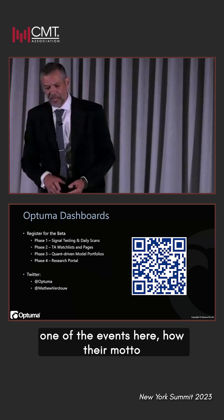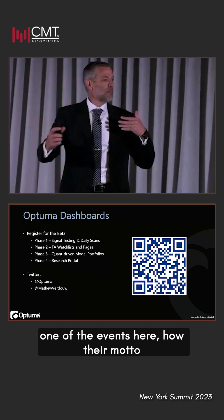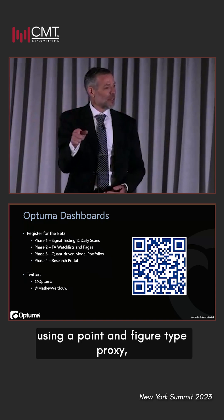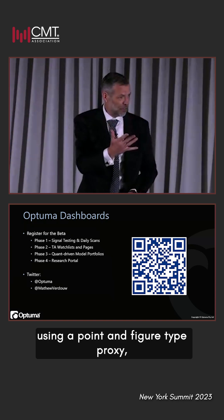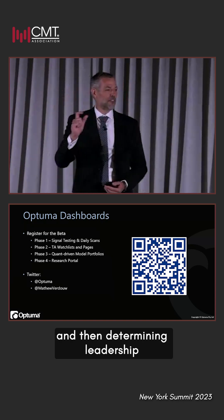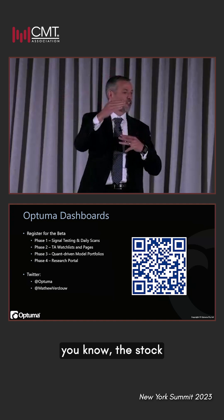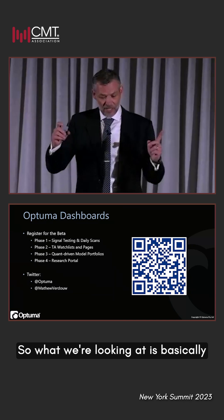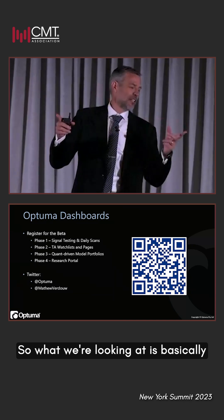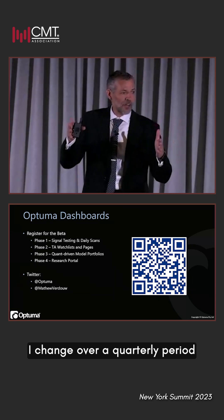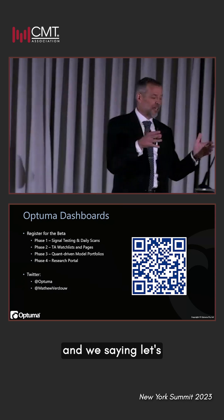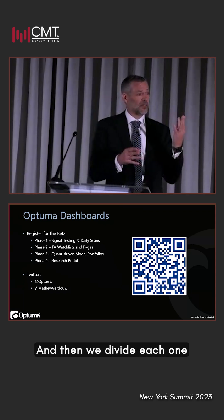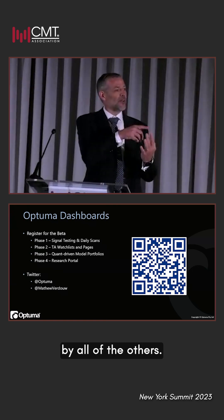...how their model was taking every single security, dividing them using a point-and-figure type proxy, and then determining leadership by counting up the stocks that had the most outperformance. So very similar. What we're looking at is basically a change over a quarterly period — we get all of those changes for the four asset classes and then divide each one by all of the others.